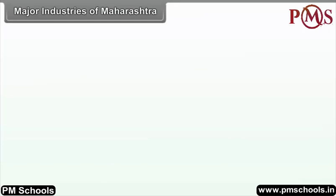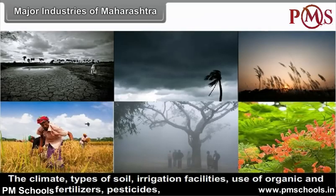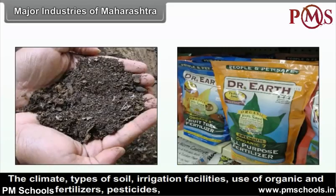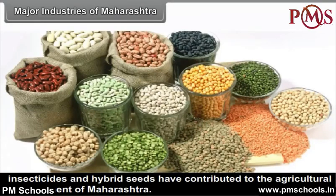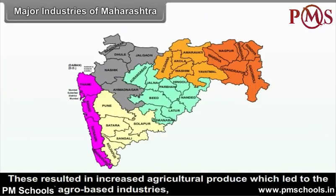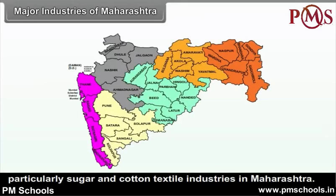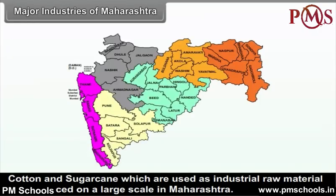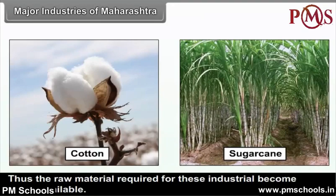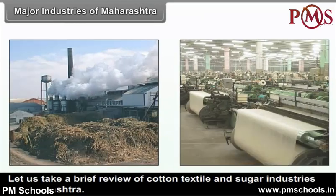The climate, types of soil, irrigation facilities, use of organic and chemical fertilizers, pesticides, insecticides and hybrid seeds have contributed to the agricultural development of Maharashtra. These resulted in increased agricultural produce, which led to the growth of agro-based industries, particularly sugar and cotton textile industries in Maharashtra. Cotton and sugarcane, which are used as industrial raw materials, are produced on a large scale, making raw material easily available.